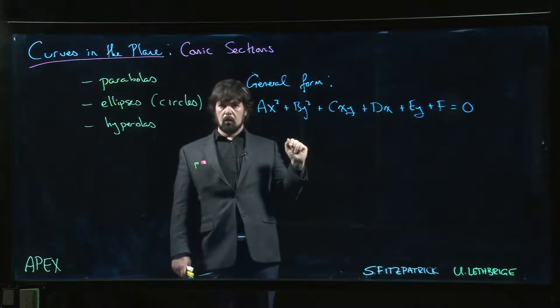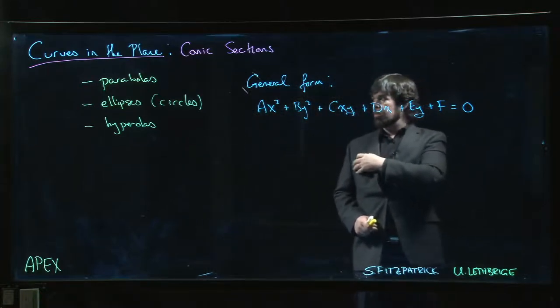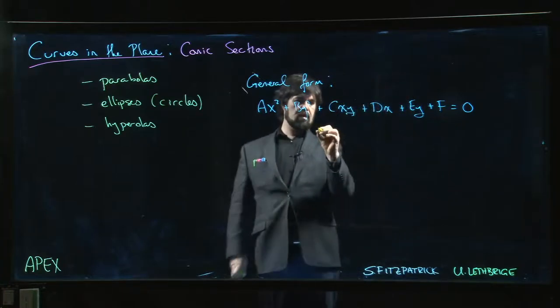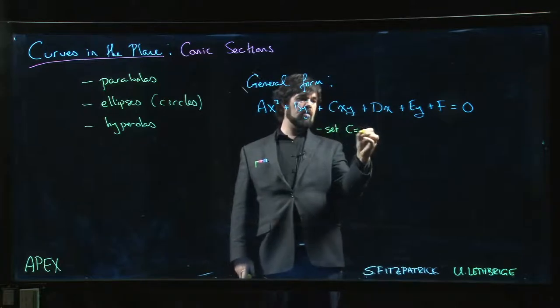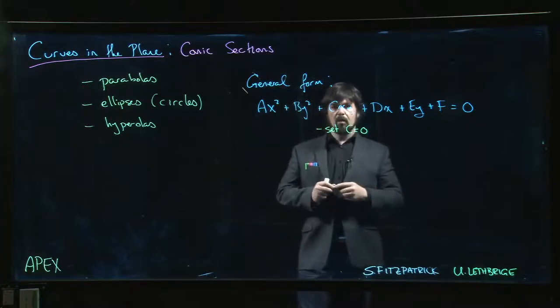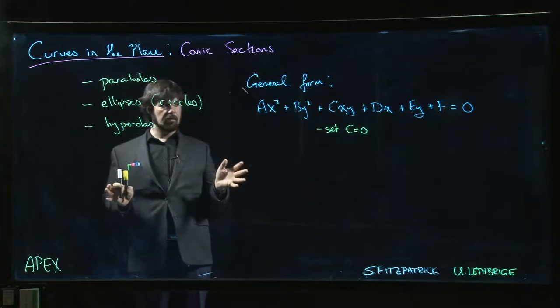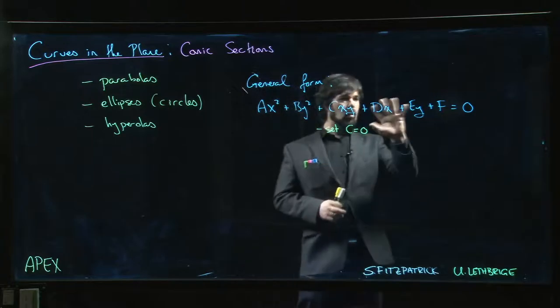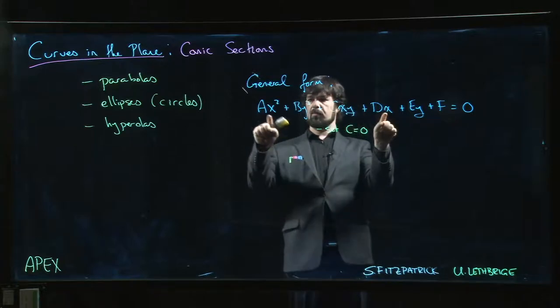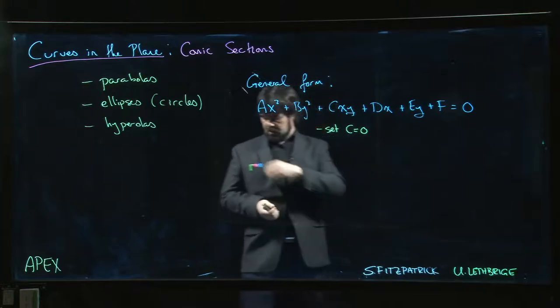Now one minor concession that we make when we're doing this in calculus two is we typically set C equal to zero. We like to not have cross terms. And you can deal with conic sections that have those cross terms - you might see this in a linear algebra course because if you ignore the lower order stuff, you can complete the square in x and complete the square in y.